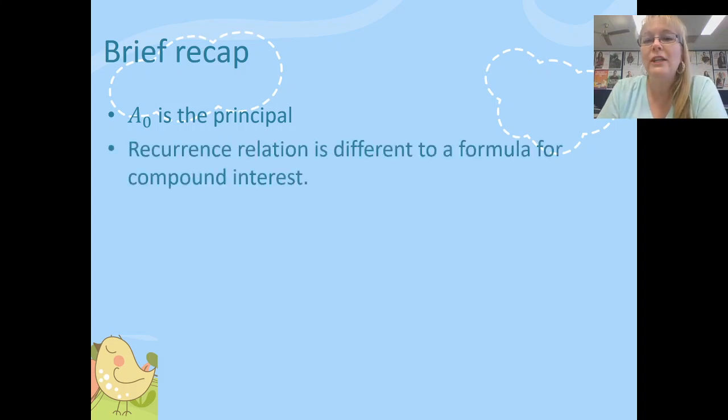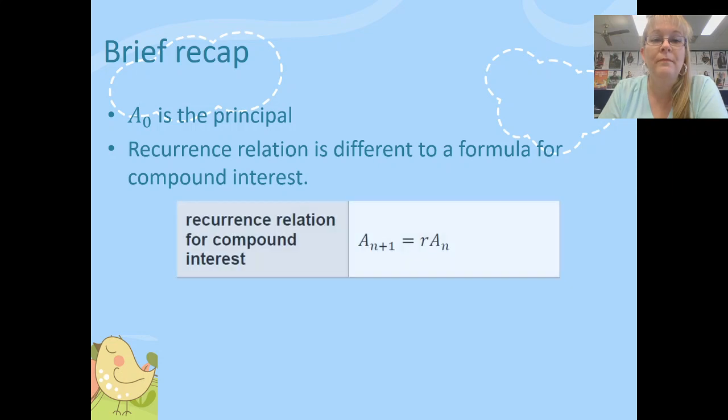Now a recurrence relation is different to the formula for compound interest. That's something we also need to learn and memorize as well. Although I do believe that is on the QCAA formula sheet. But you should know the difference between the two. A recurrence relation is for only finding the next term, whereas compound interest is something that we use to find terms well into the future. So this is our formula here for a recurrence relation. And it's important to know the difference between this and the compound interest formula.